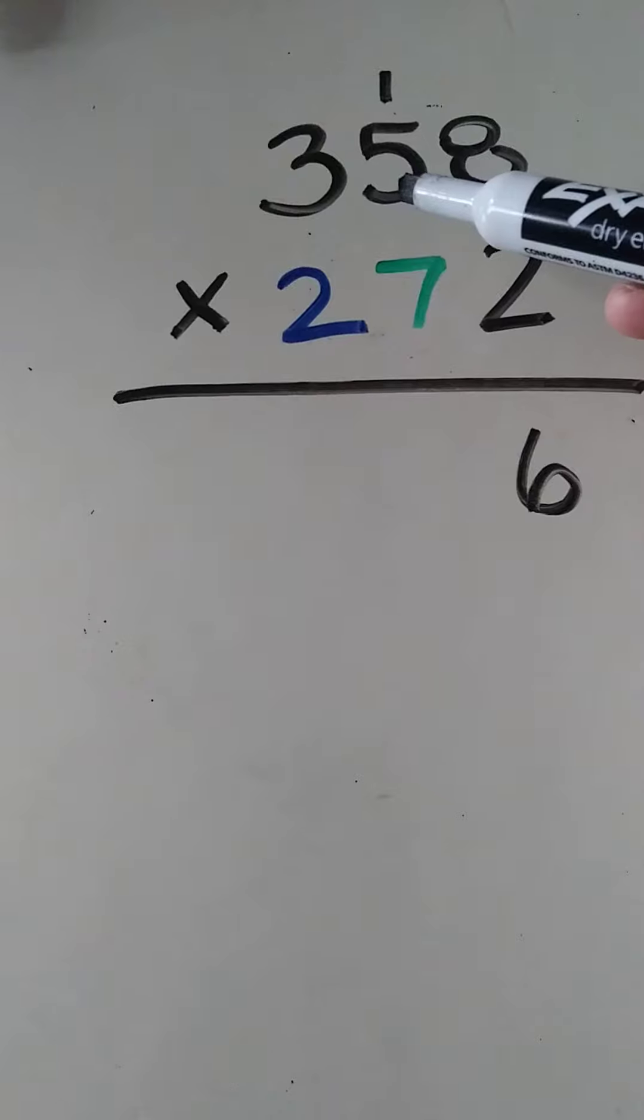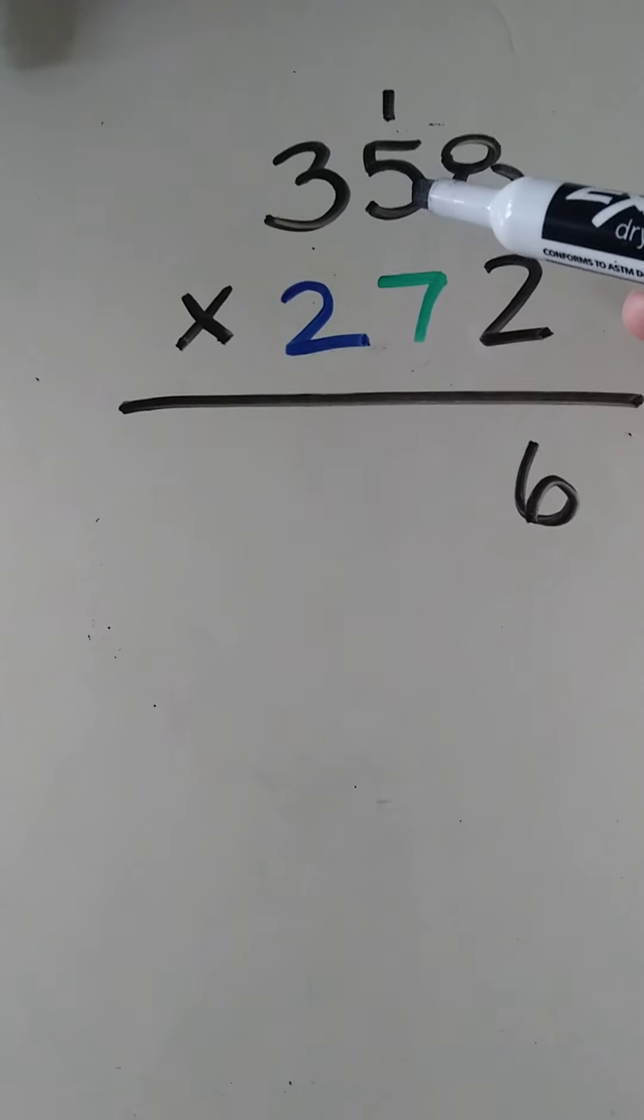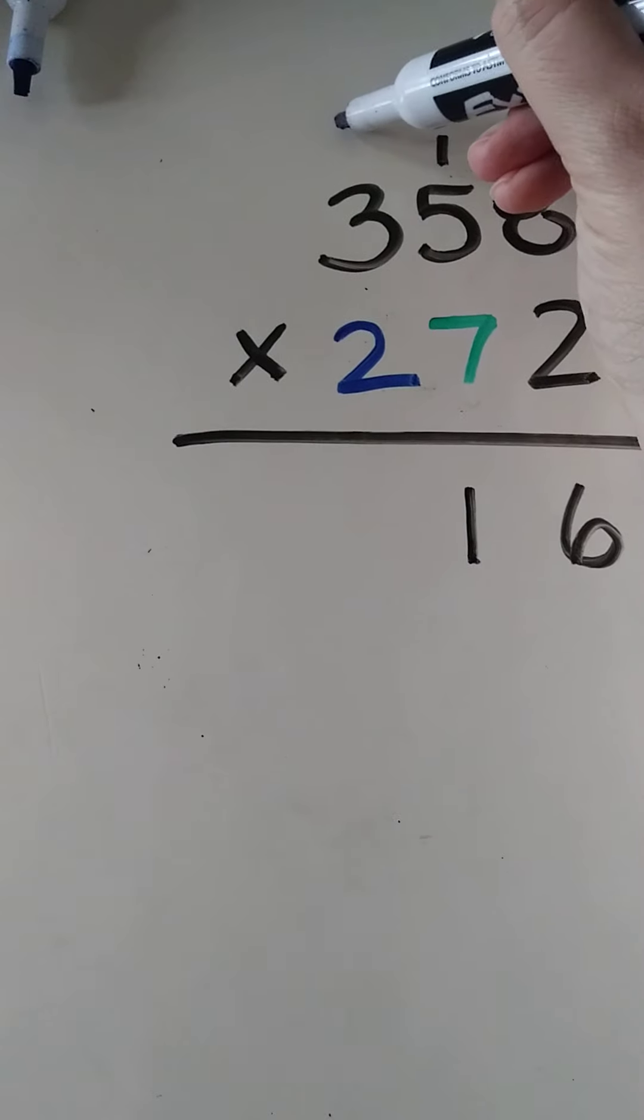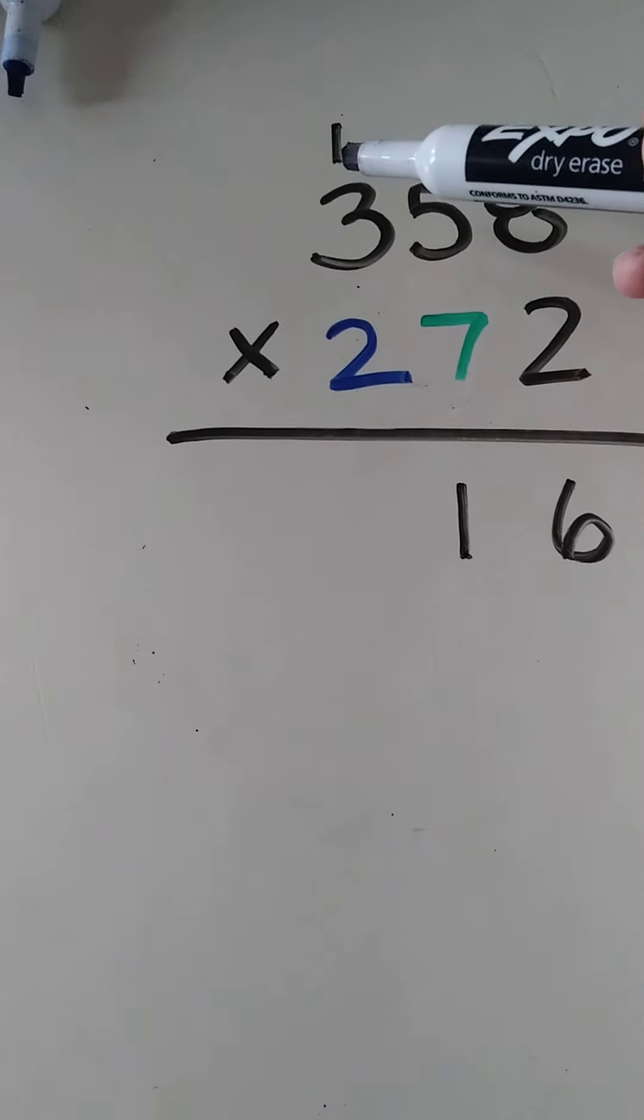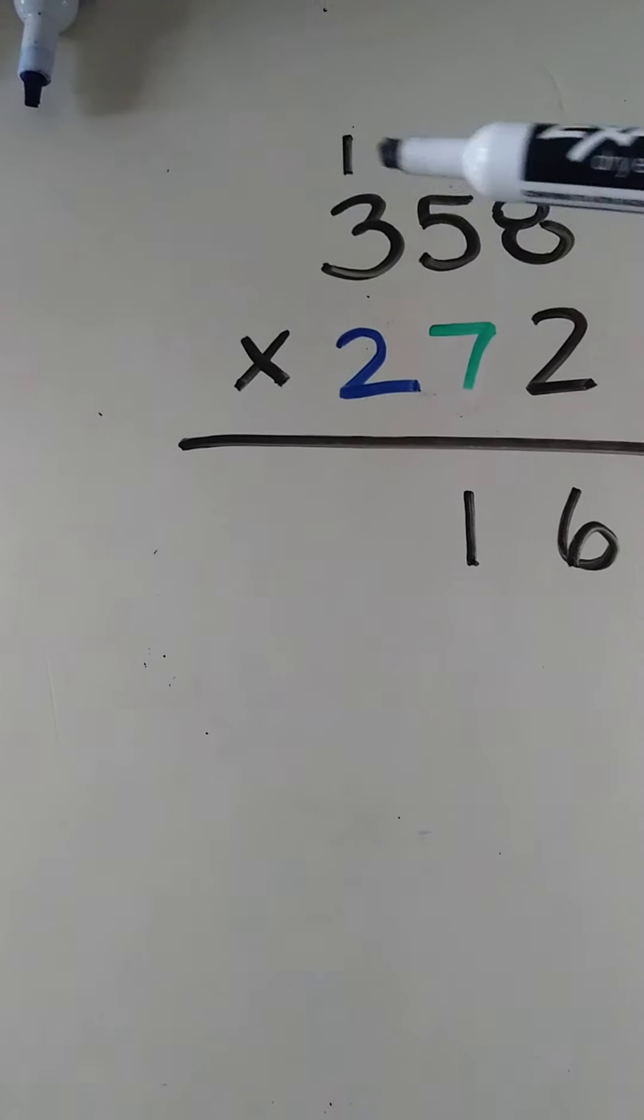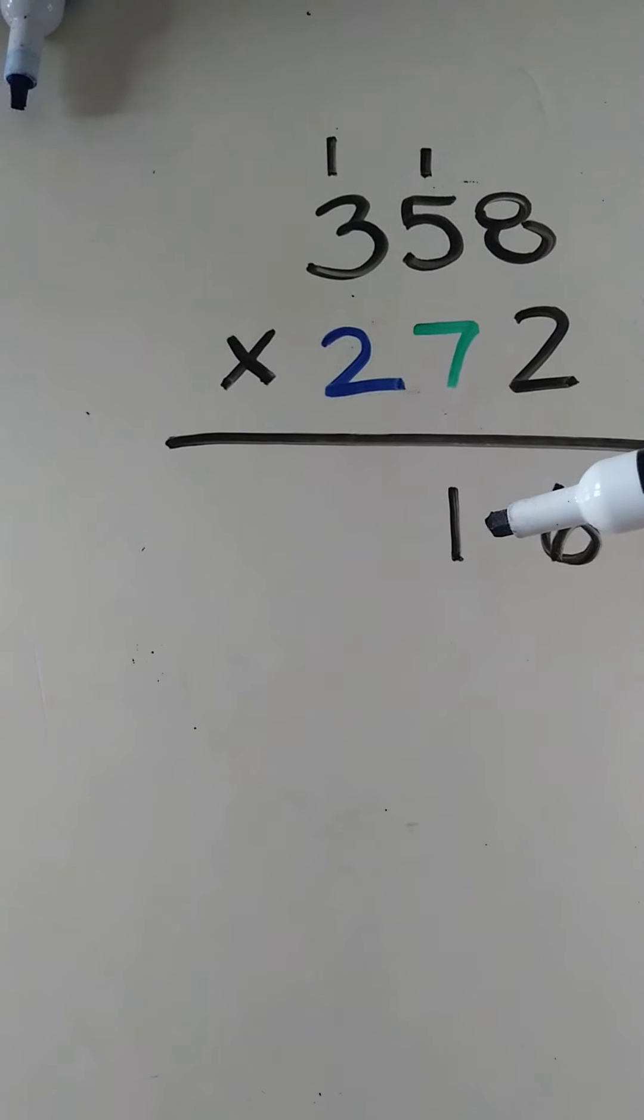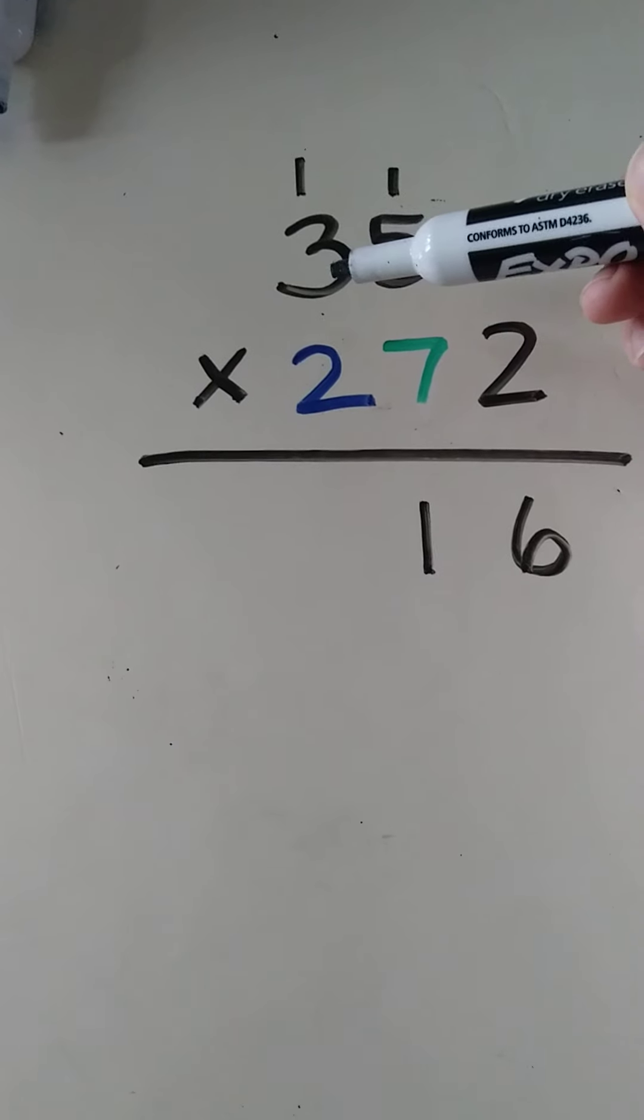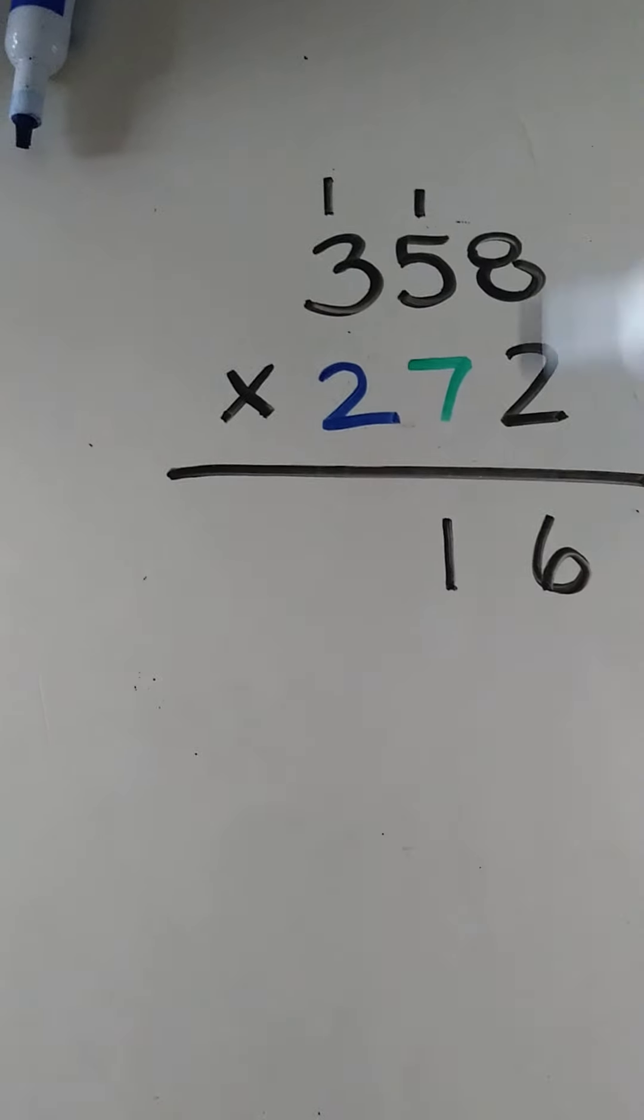So here we go: 2 times 8 is 16, and put the 6 down here and the 1 up here. Then we do 2 times 5 which is 10, plus 1 is 11. And again, the first digit goes on the next number at the top and the second digit goes on the bottom. And then I'm going to do 2 times 3 which is 6, plus 1 which is 7.